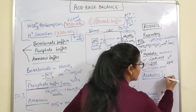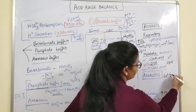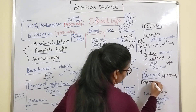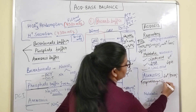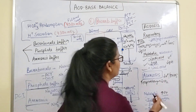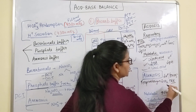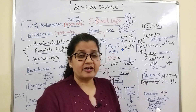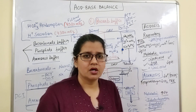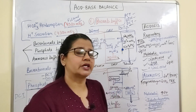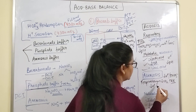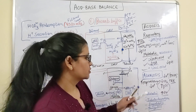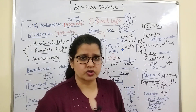Alkalosis involves a reduction in H+ and an increase in HCO3-. Respiratory alkalosis occurs when there is less CO2 in the body due to hyperventilation — increased respiratory rate washes out CO2. Less CO2 means less carbonic acid, which means less H+, and hence high pH. This is respiratory alkalosis.